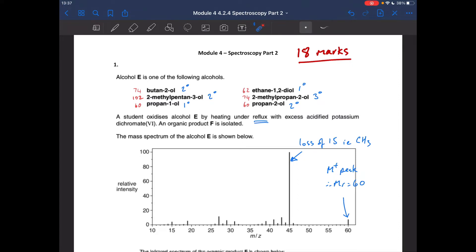So we've got butan-2-ol is secondary, 2-methylpentan-3-ol is secondary, propan-1-ol is primary, and then these three: ethane-1,2-diol is primary, the next one is tertiary, and the last one, propan-2-ol is secondary.